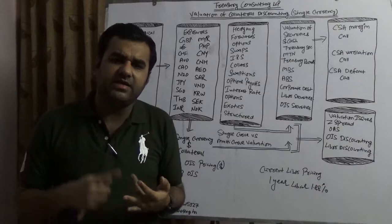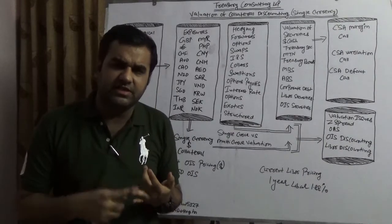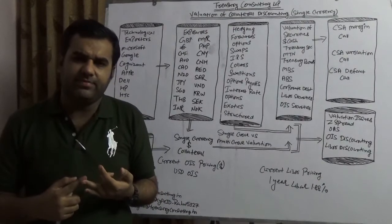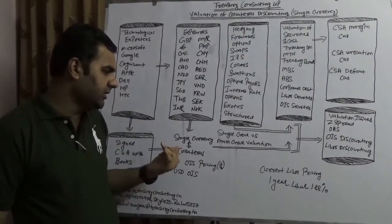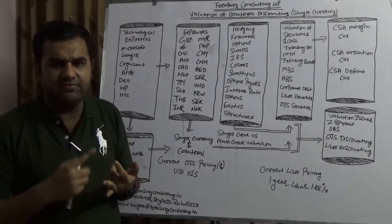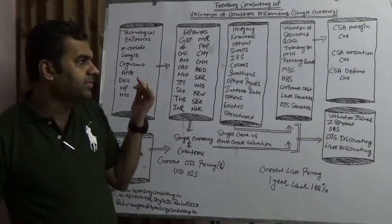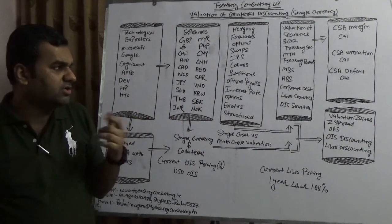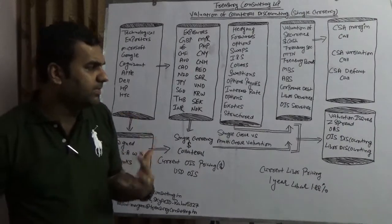If we are signing 10 different CSAs, credit support annexes with 10 different banks, and all the 10 different banks, assuming we are signing a single currency, which is dollar. And all the 10 different banks are having 10 different valuation curves, for example, dollar, treasury securities, medium term notes, treasury bonds, mortgage backed, asset backed, corporate debt, and others.